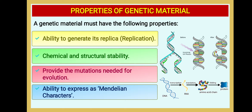In the last class we discussed the properties of a genetic material. DNA as genetic material shows the following properties: ability to generate its replica (self-replication), chemical and structural stability compared with RNA, providing mutations needed for evolution, and the ability to express a Mendelian character. These four are the most important properties of DNA which make it suitable as genetic material, better than RNA.